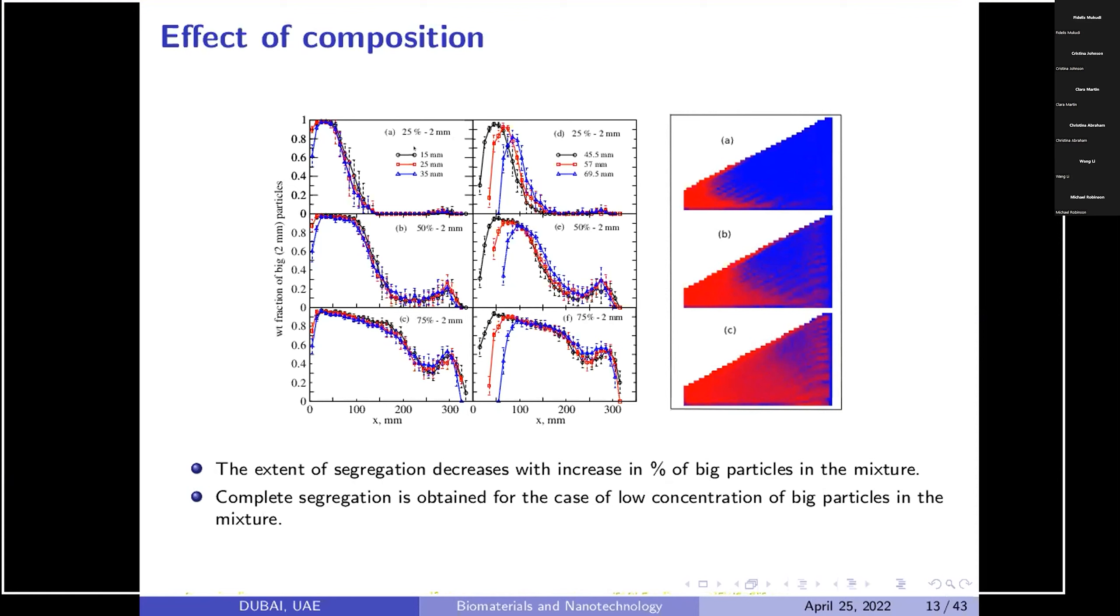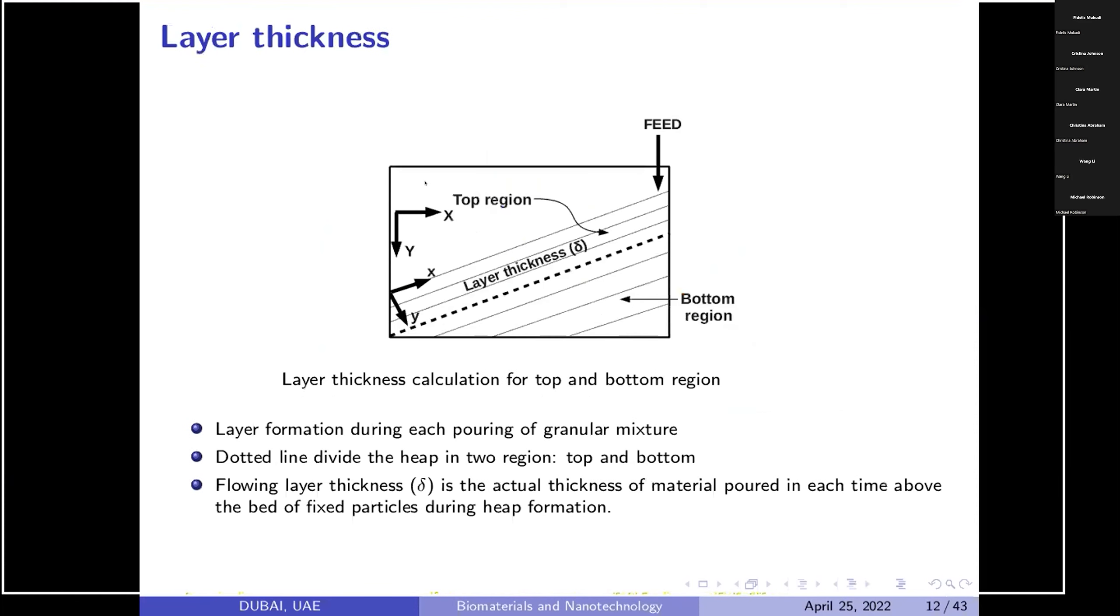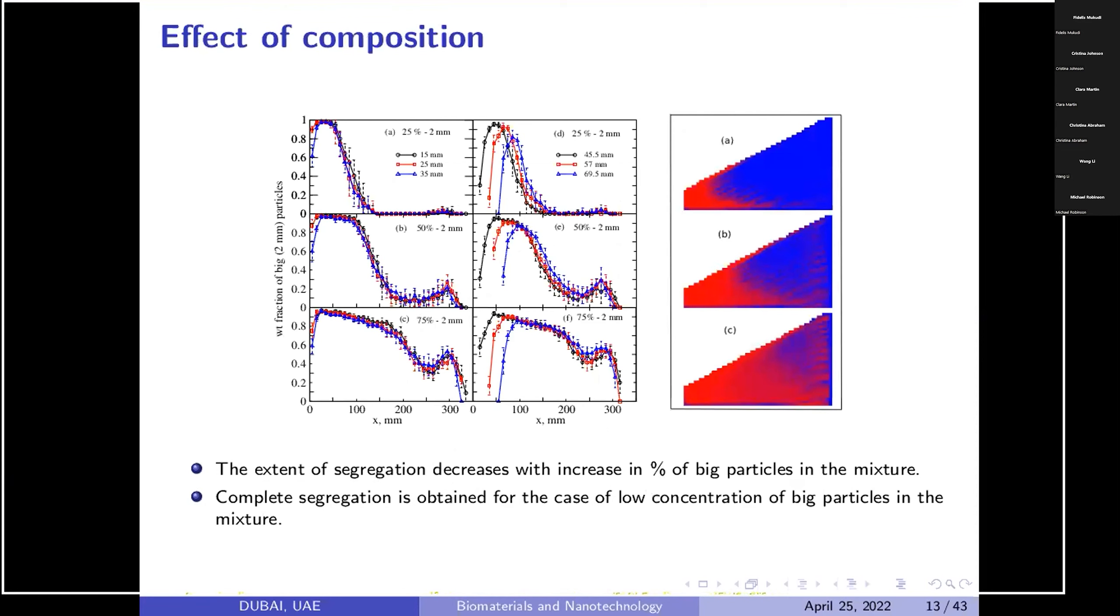Another important point is, this 15, 25, and 35 are nothing but the depth in terms of Y. I mean to say this is the surface where it is zero, and from zero we have measured like we have taken 10 mm layer thickness. Layer thickness calculation is done by the experiments in which we poured small particles and large particles intermittently instead of continuous.